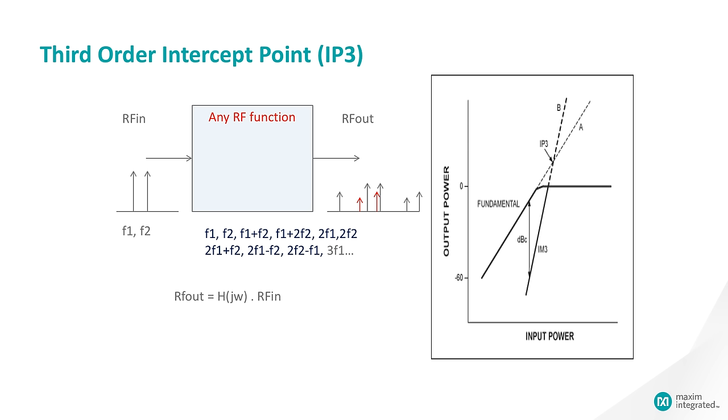IP3 is a specification that can be used to predict the level of these unwanted signals versus the useful signal power. IP3 is an important concept, but it is also a fairly complicated one. So we'll wait until later to discuss this further.